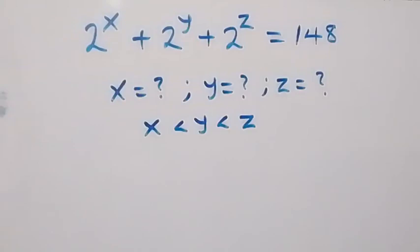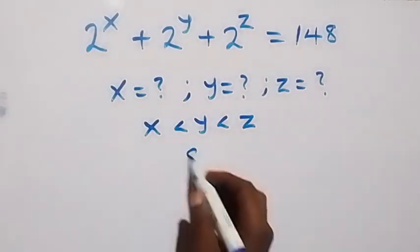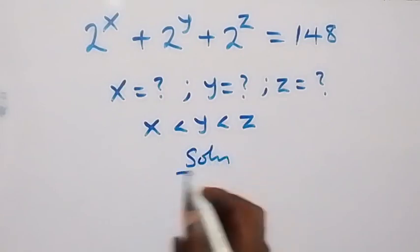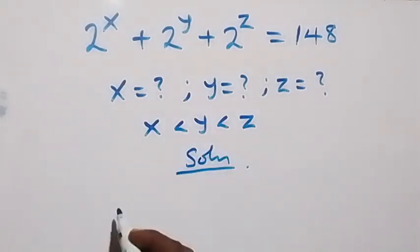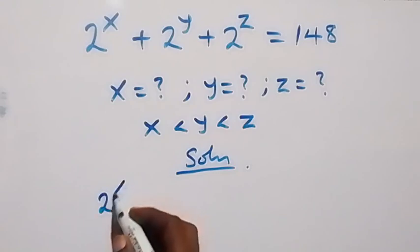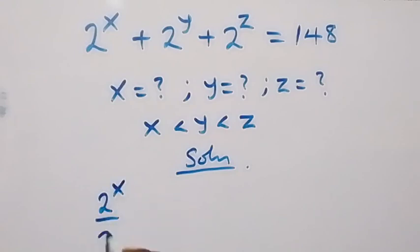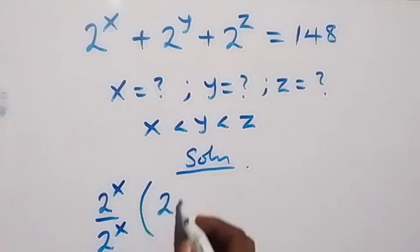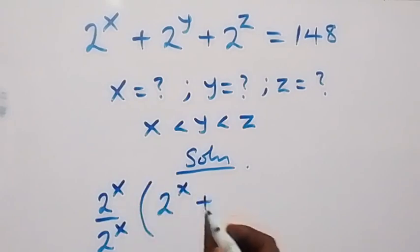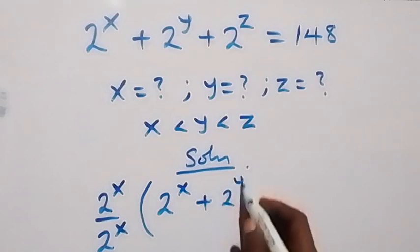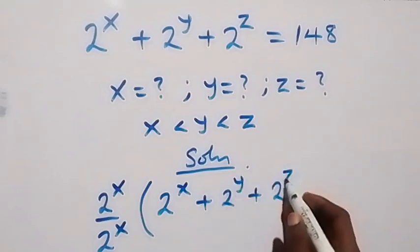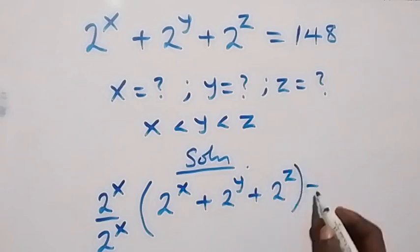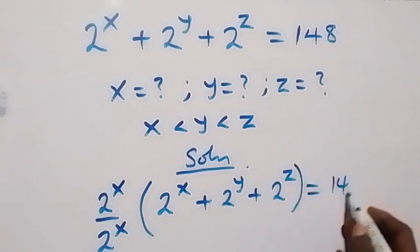Hello, you are welcome. How to solve for x, y and z in this nice loop of problem. What we have here, we can write it and multiply by 2 raised to power x, also divide by 2 raised to power x. What is given is 2 raised to power x plus 2 raised to power y plus 2 raised to power z, close bracket equals to 148.